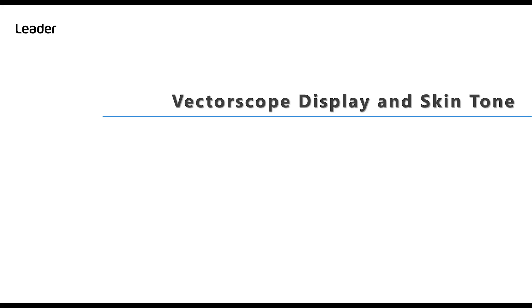So let's have a look at how the vectorscope display can be used to adjust and set up skin tone correctly. Pictures that include people can be some of the most challenging to set up correctly and camera match. The main reason for this is that the human brain is used to seeing people every day and knows exactly what skin color looks like. The other challenge we face is that people have different colored skins.